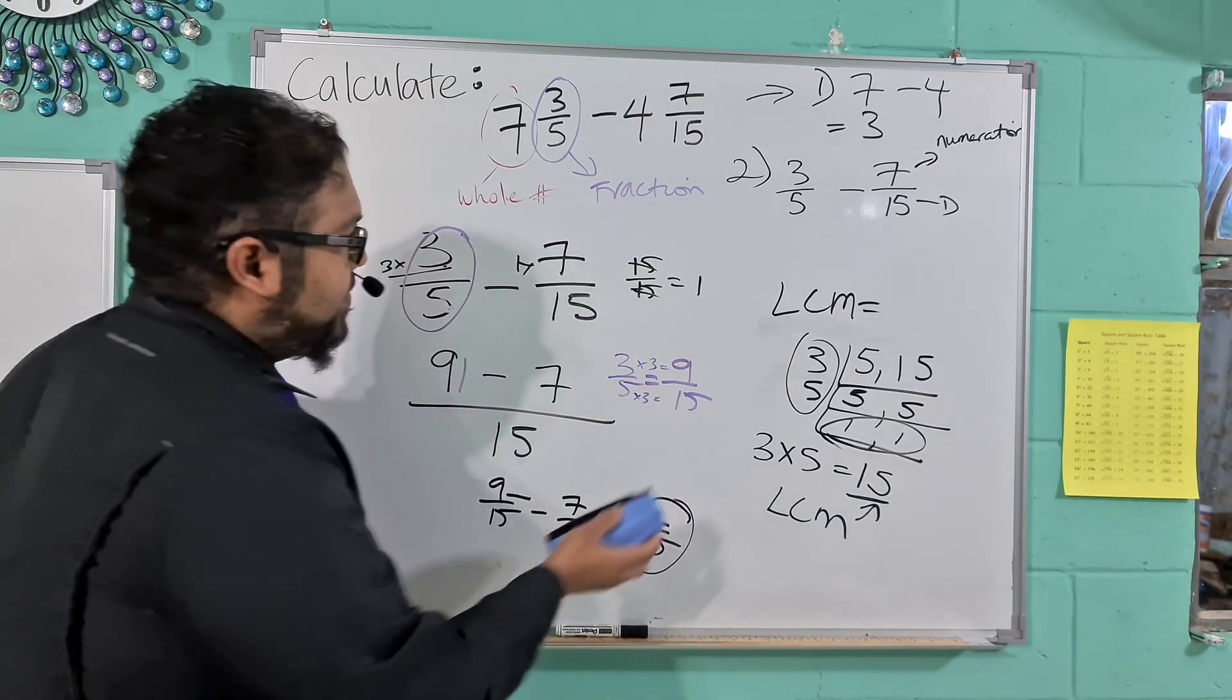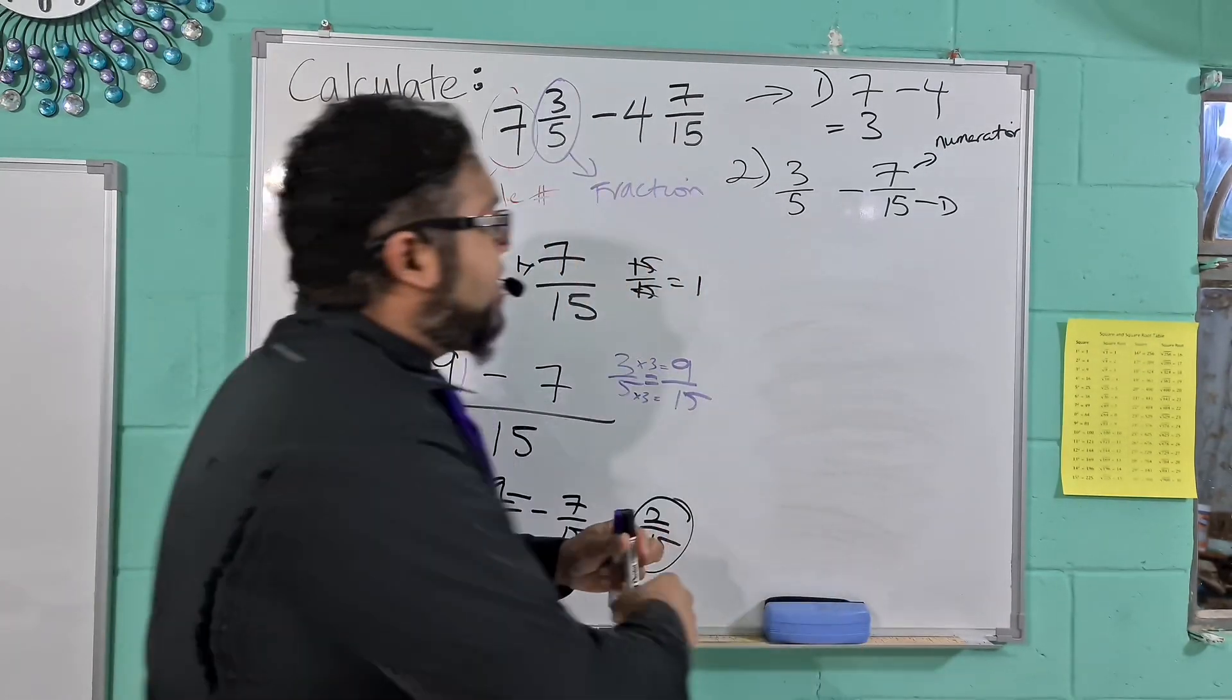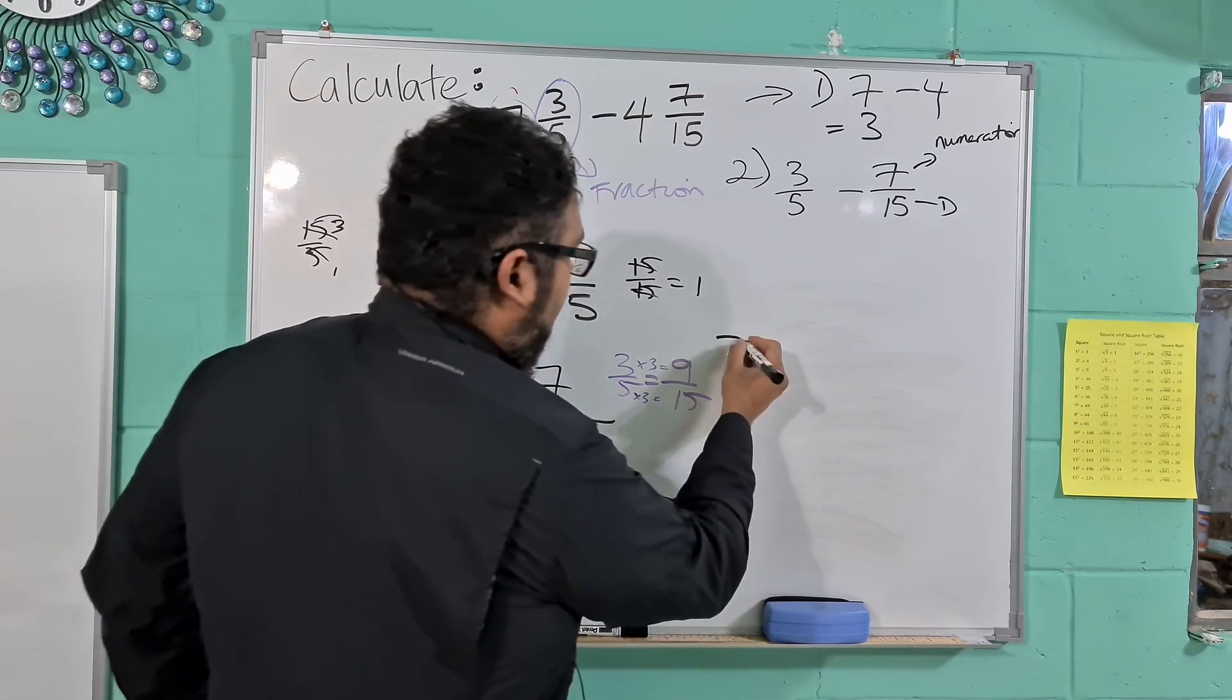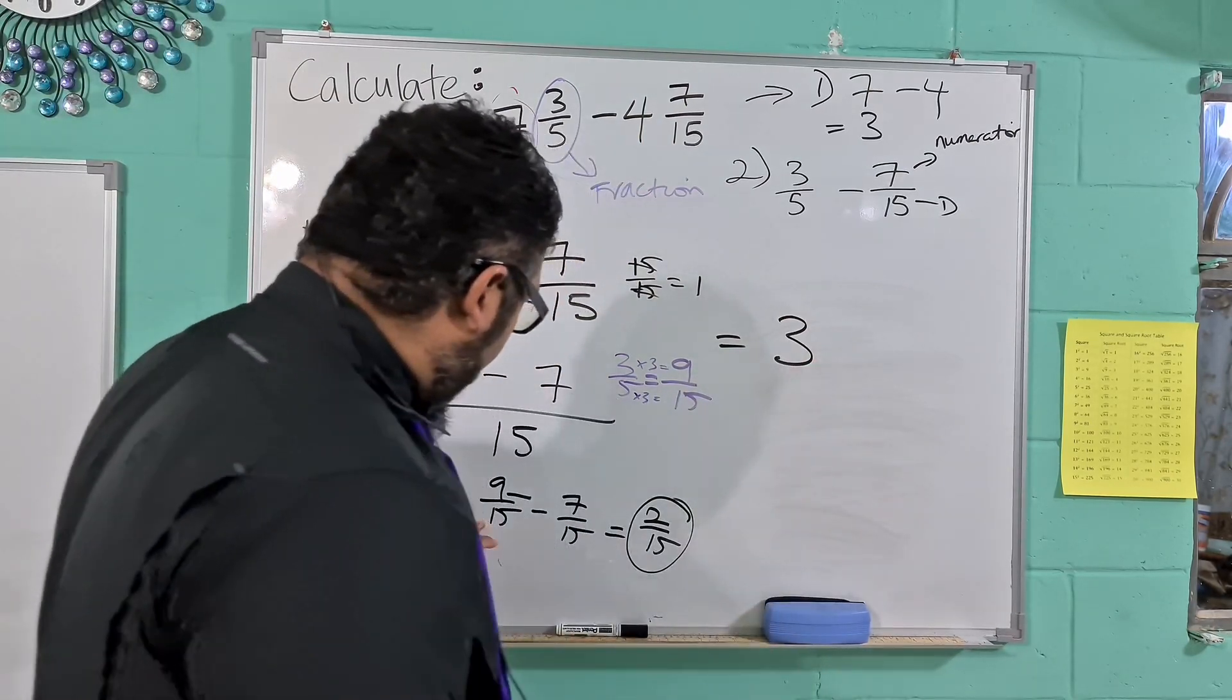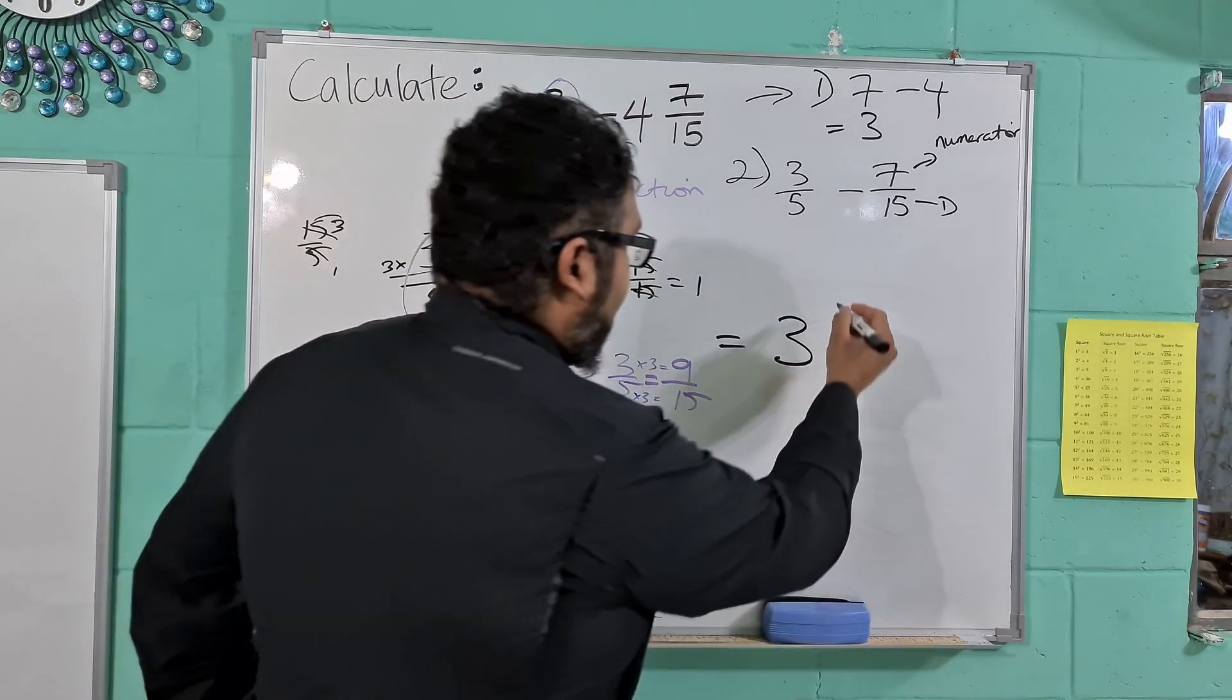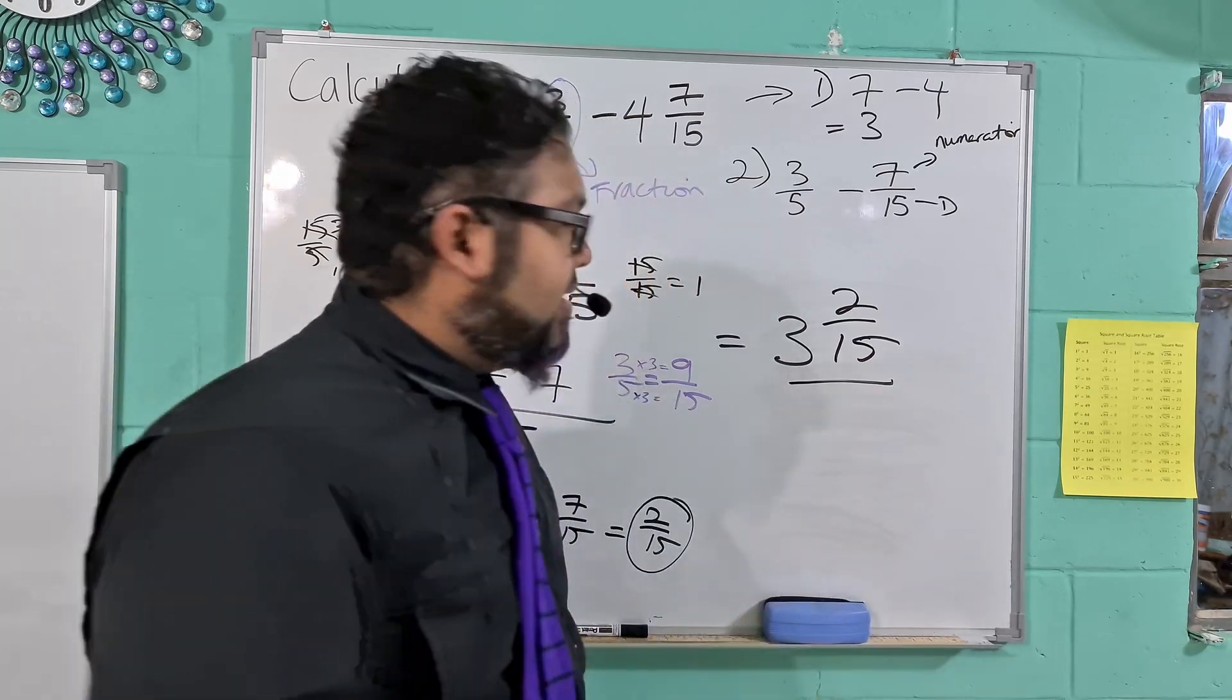So all we're doing is making these fractions equivalent, same denominator, different numerators. And that way we could just work out the answer. So we have 9 minus 7, 2 over 15. So what we have to do now is we just need to combine our answers. So the first thing we got, 7 minus 4 is 3, and then 9 over 15 minus 7 over 15 equals 2 over 15. And that is the answer.